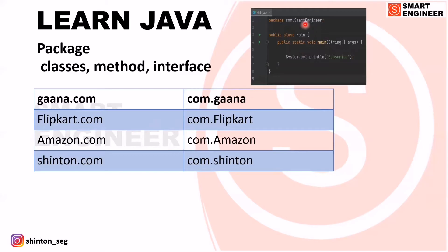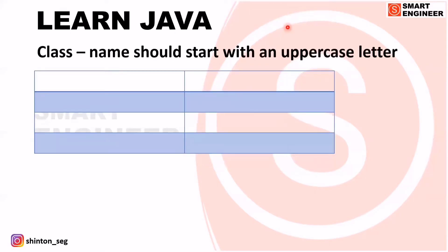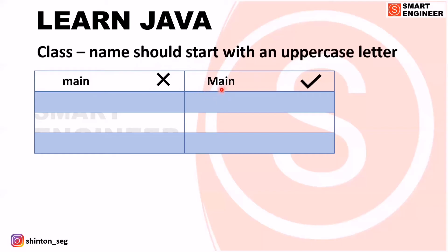This is the demo program we discussed. The package name is com.smartengineer. Now, class — remember this: a class name should always start with an uppercase letter. Let us discuss some class names. A class name like 'main' written in lowercase is wrong, because the class name should always start with an uppercase letter. 'Main' written with a capital M is correct because the class name is starting with an uppercase letter.